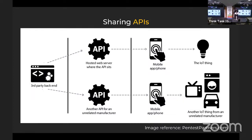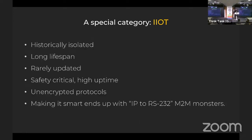A lot of companies have decided to outsource their APIs — so now you can hack a vehicle and end up in the bathtub, because bathtubs also have APIs for reasons I don't really understand. Industrial IoT is historically isolated, has a really long lifespan — some IoT devices are older than people in this room. They're rarely updated, safety-critical, high uptime, protocols are unencrypted because when they were installed encryption wasn't needed or understood. Making them 'smart' usually ends up with some monstrosity called IP-to-RS232 or similar, which literally makes you cry.